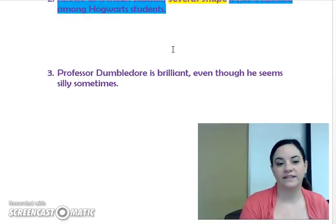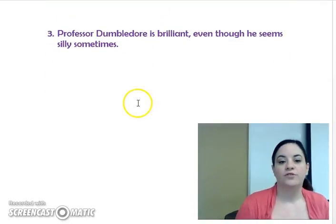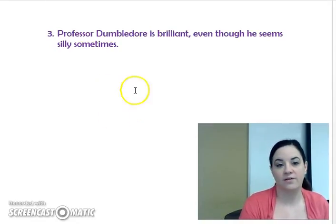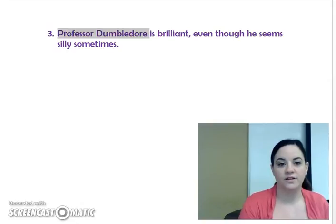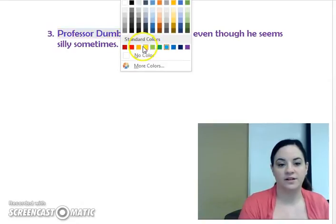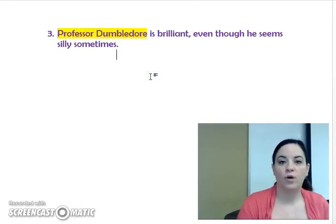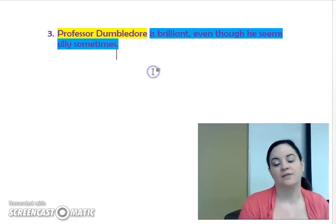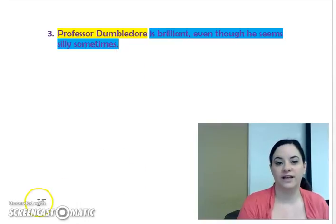And then finally, this last example: 'Professor Dumbledore is brilliant, even though he seems silly sometimes.' Who is this sentence about? This sentence is about Professor Dumbledore — so that's going to be our topic. And what does the writer want to tell us? That he's brilliant, even though he's silly. So that is our controlling idea.